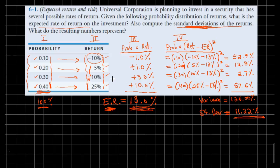And we are to figure out an expected return on this investment. So this expected return of 13%, that's the mean. And the standard deviation is 11.22%.